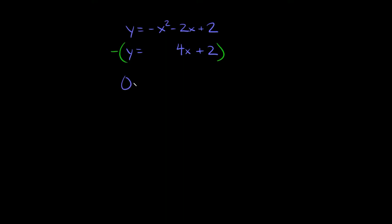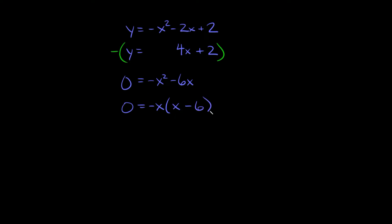y minus y equals 0. Here we have negative x squared minus 0, which is just negative x squared. Then negative 2x minus 4x equals negative 6x. And 2 minus 2 equals 0, so we don't have anything there. So we get 0 equals negative x squared minus 6x. Now we just need to factor this.